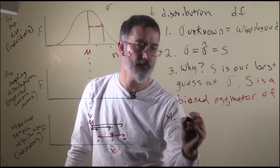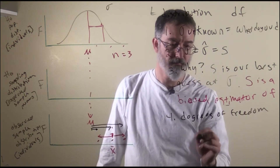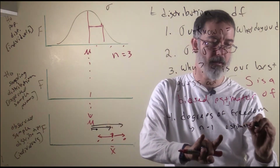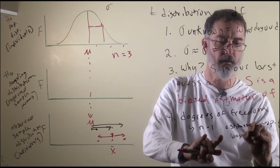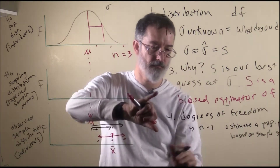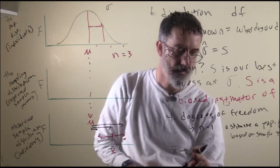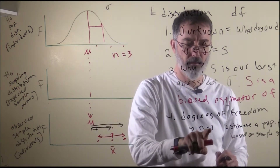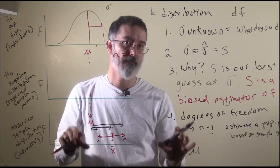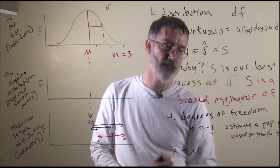Degrees of freedom — the formula is generally n minus 1 for each time that you estimate a population parameter based on a sample statistic. When we calculate the sample standard deviation, we use degrees of freedom because we are using our sample mean as our estimate of the population mean, and we lose one degree of freedom. In the future, with two groups of participants, we use each group's sample mean as a guess and lose a degree of freedom for each group.